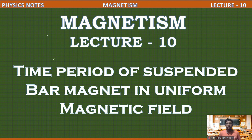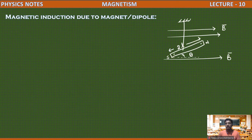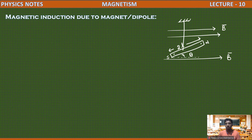Hello dear students. In this lecture we are going to see the time period of a suspended bar magnet when it is placed inside a uniform magnetic field. This is our bar magnet, placed inside the magnetic field and suspended by means of a thread. Initially it is making an angle theta with the field direction.